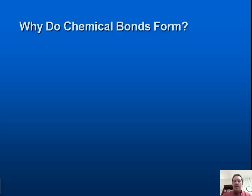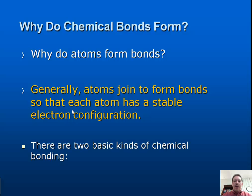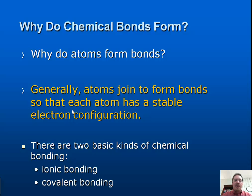Starting with our first question — why do atoms form bonds? Generally, atoms form bonds so that each atom has a stable electron configuration. Basically, they bond so that the electrons are happy, and we call that being stable. We've got two basic kinds of chemical bonding: ionic and covalent.